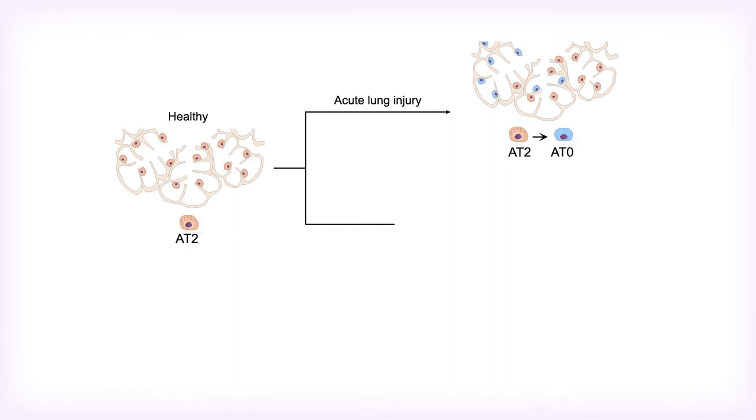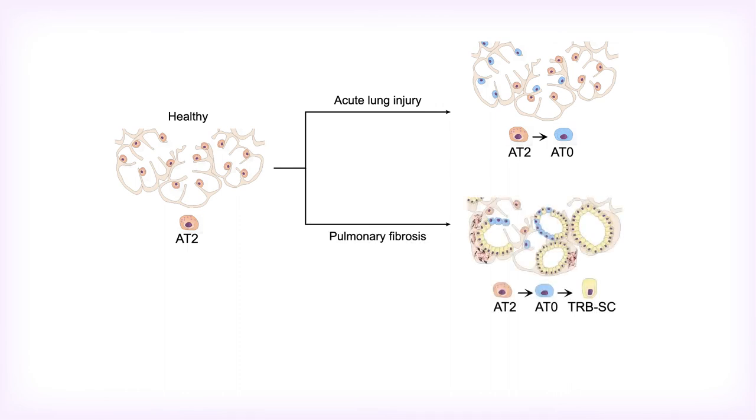Furthermore, in fibrotic tissue, AT0s and TRBSCs localized in regions of varying injury severity, AT0s in mildly fibrotic regions, and TRBSCs in severely fibrotic areas, resembling classical histological descriptions of bronchiolized regions.